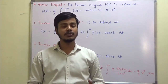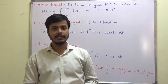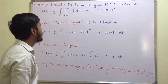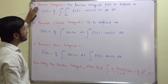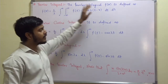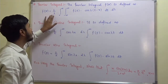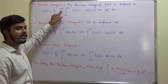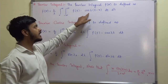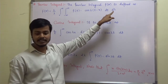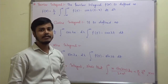In order to solve problems based on Fourier integrals, the Fourier integral is defined for a function f as one by pi, integral from zero to infinity, integral from minus infinity to infinity, of f(t) cos(λ(t − x)) dt dλ, where λ is any parameter.